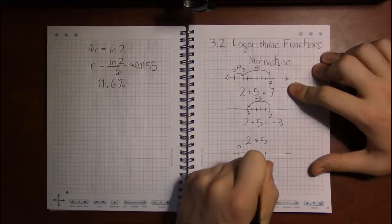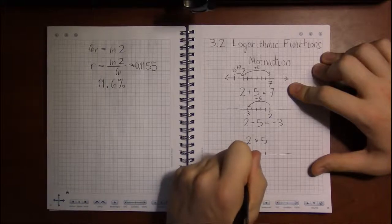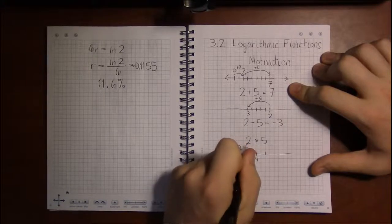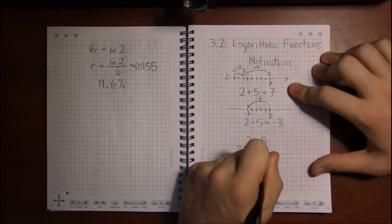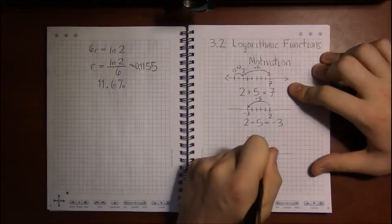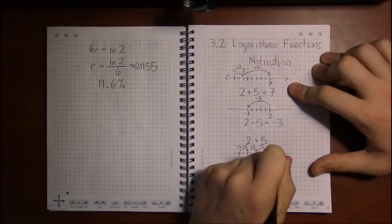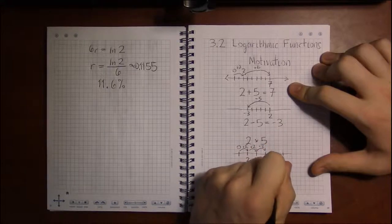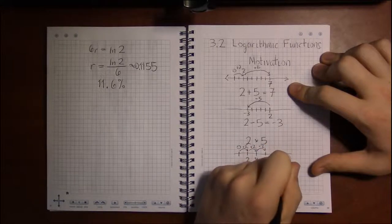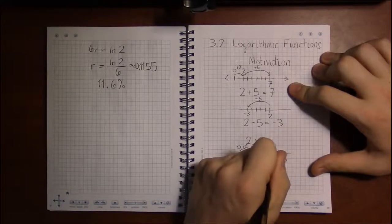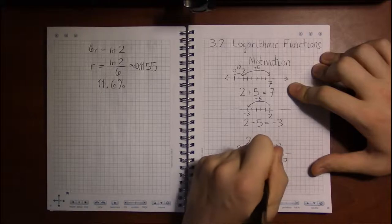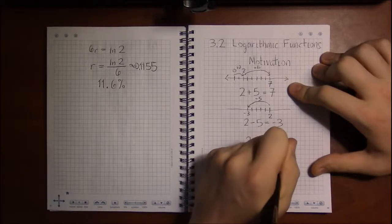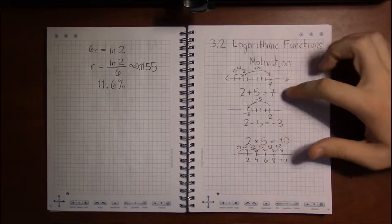So, 1 plus 2 would land you at 2, the next one you'd be at 4, after a third plus 2, you'd be at 6, and after 5 of these, you'd end up at 10, which would tell you that 5 times 2 is 10.